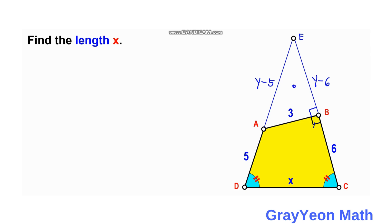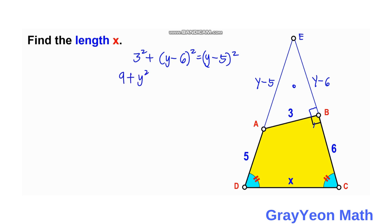In right triangle ABE, the hypotenuse is AE. The two legs are AB = 3 and BE = Y minus 6. So by the Pythagorean theorem: 3² + (Y − 6)² = (Y − 5)², which gives us 9 + Y² − 12Y + 36 = Y² − 10Y + 25.